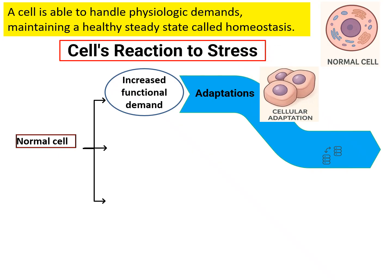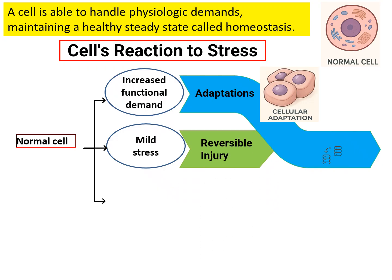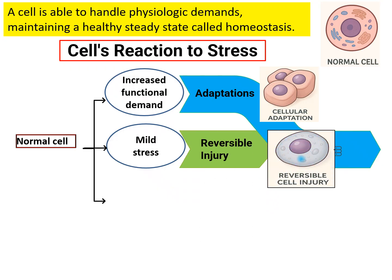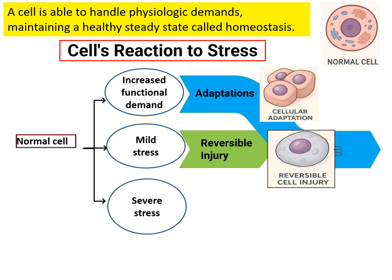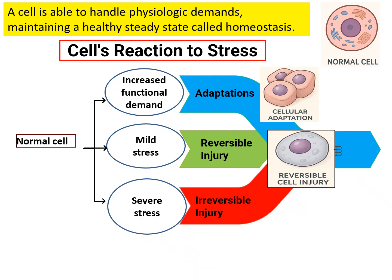When a normal cell is subjected to increased functional demand, it undergoes cellular adaptations. When the same cell is subjected to mild stress, it goes for reversible form of cell injury. As the name indicates, once the stimulus is removed, it reverses back to normal. When subjected to severe stress for a prolonged time, it will go for irreversible cell injury or cell death by necrosis and apoptosis.